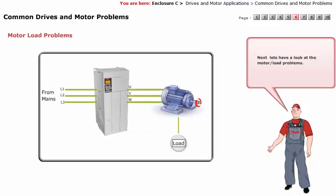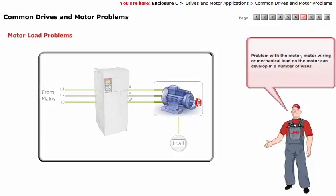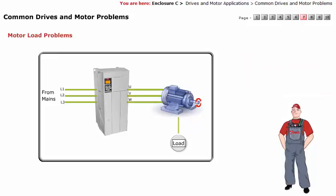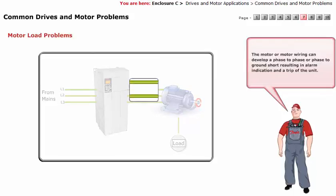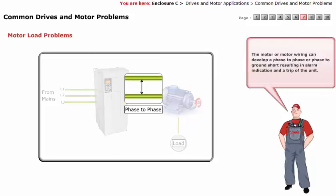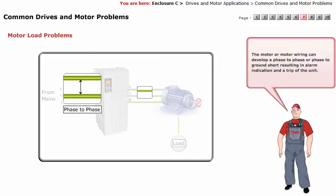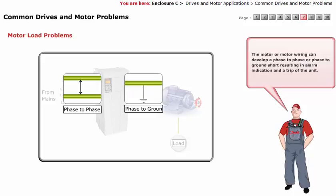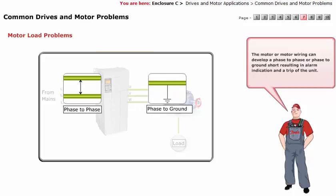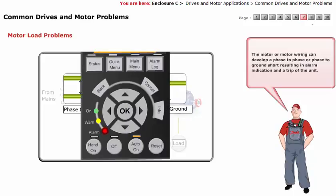Next, let's have a look at the motor load problems. Problems with the motor, motor wiring, or mechanical load on the motor can develop in a number of ways. The motor or motor wiring can develop a phase-to-phase or phase-to-ground short, resulting in an alarm indication and a trip of the unit.